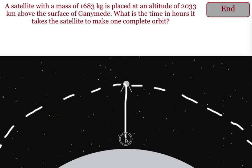First thing to realize is that it tells you how far the satellite is from the surface of the planet. That's the altitude. It is 2,033 kilometers up. We want to take this number and change it into meters.